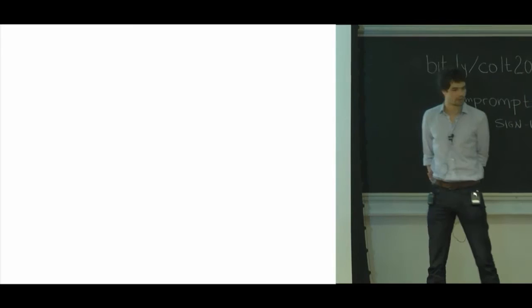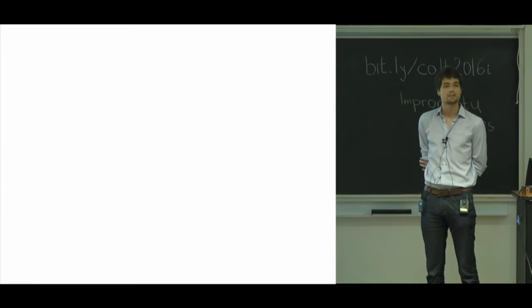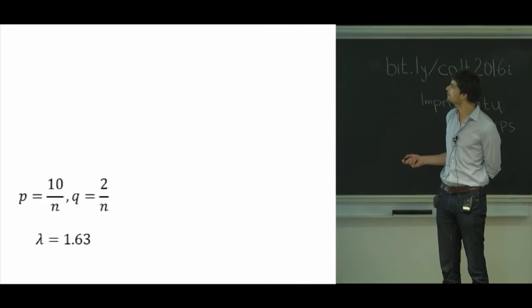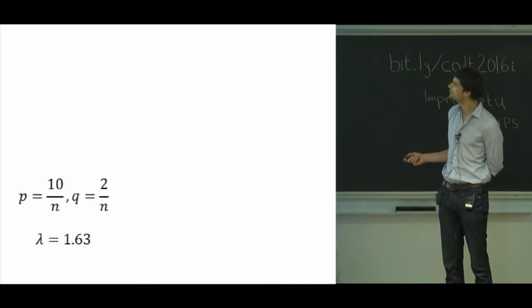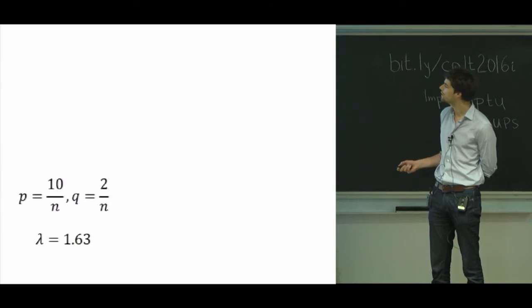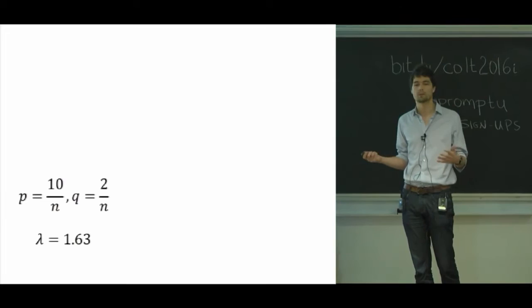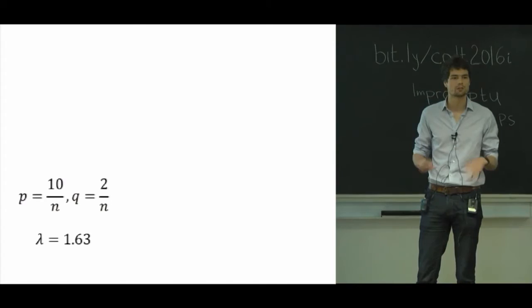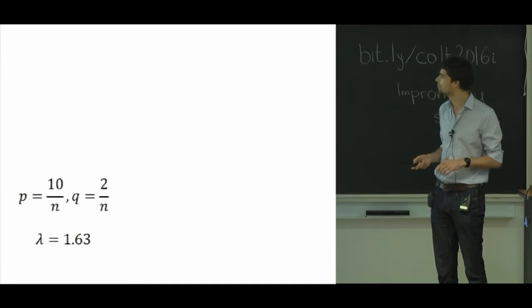So we run a small numerical example to check that it makes sense to be looking at this heuristic. For now it's just heuristic. And we pick this setting where it's the constant average degree regime, the first regime. P is 10 over n, Q is 2 over n. So that's the in connection and across connection. And this amounts to a signal-to-noise ratio lambda of 1.63. So it's above 1. We're in good shape to say something non-trivial. But it's not quite big. In particular, it's not growing with n. So there's little chance that we'll be able to get back the exact partition for large values of n.